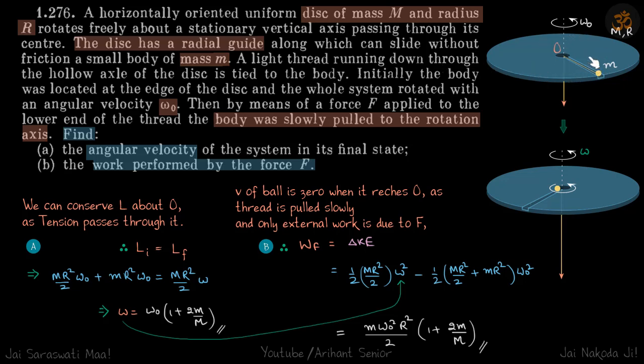We have a rotating disc that's rotating with omega naught. This disc has a groove in which there is a particle at the edge of the disc, and it's being pulled by a thread which is passing through the center. So as you pull the thread, the particle will come nearer to the center of this disc.